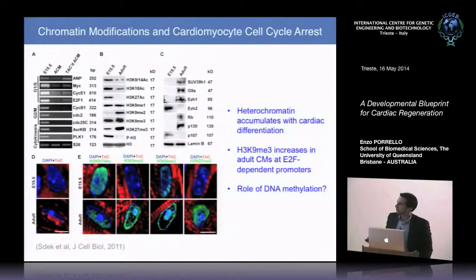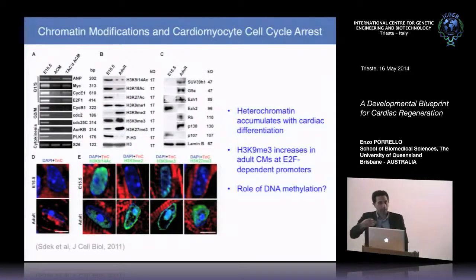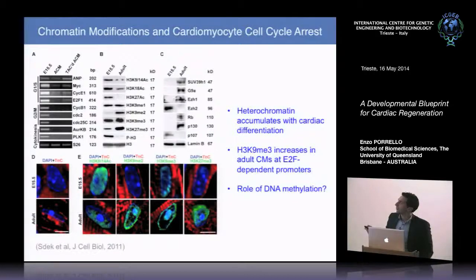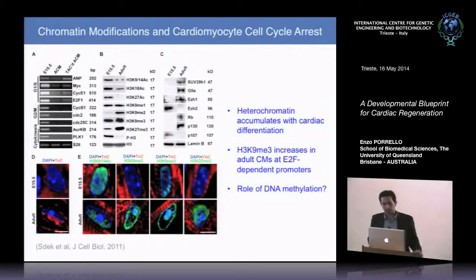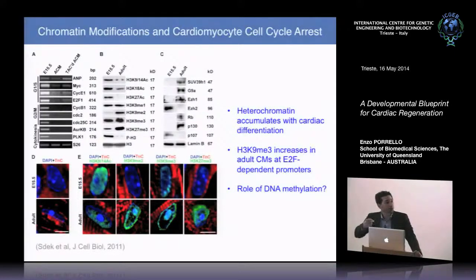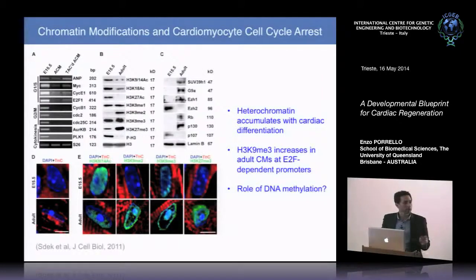They found that heterochromatin — associated with compact chromatin and gene silencing — accumulates with cardiac differentiation. The histone mark H3K9 trimethylation, associated with transcriptional repression, increases in adult cardiomyocytes, particularly at E2F-dependent promoters associated with cell cycle genes. However, they did not examine DNA methylation, and there are very few studies on DNA methylation during cardiac development, so we wanted to map changes in DNA methylation in the immediate postnatal period.